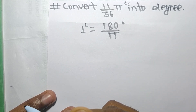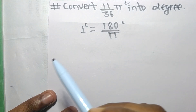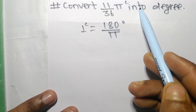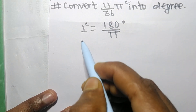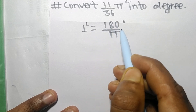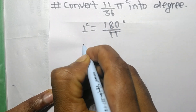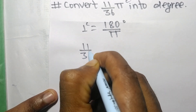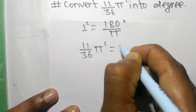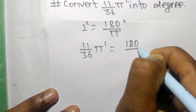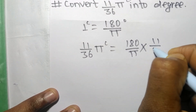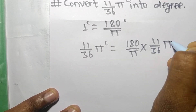Today in this video we shall convert 11/36 π radians into degrees. 1 radian is equal to 180/π degrees, so 11/36 π radians is equal to 180/π multiplied by 11/36 π degrees.